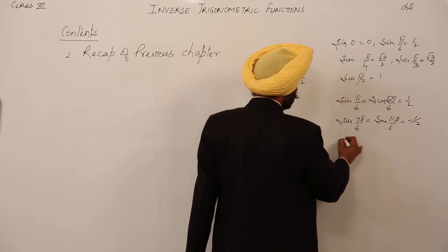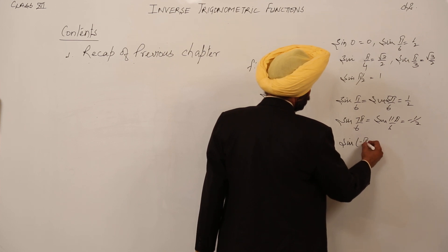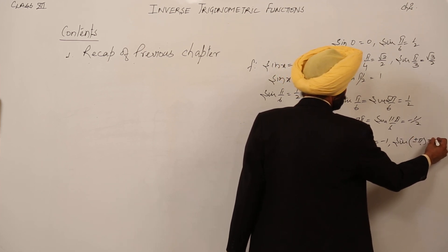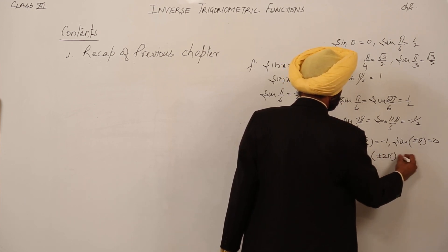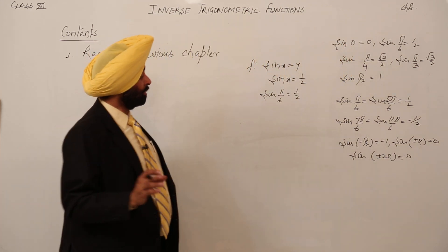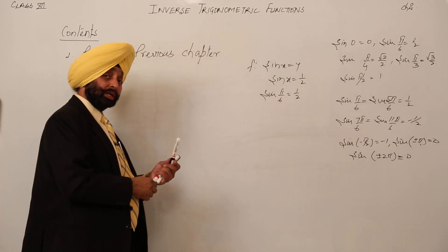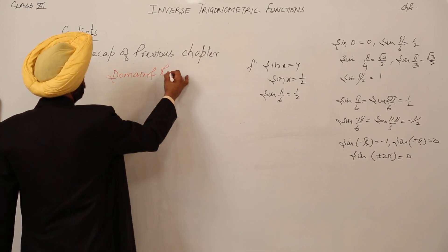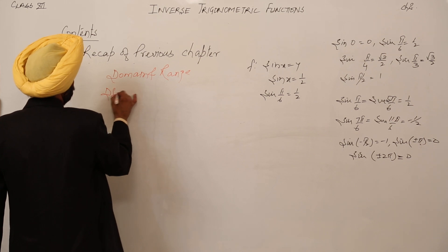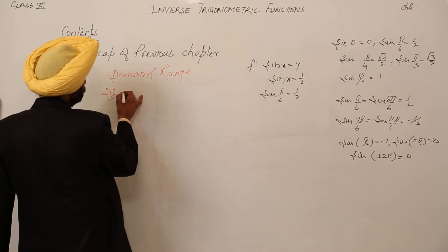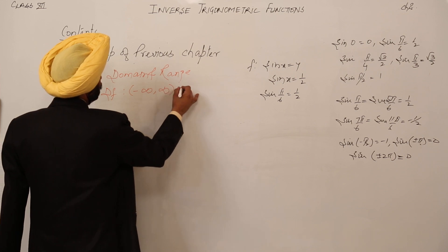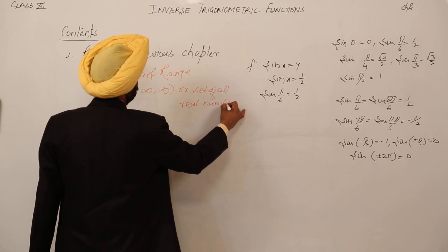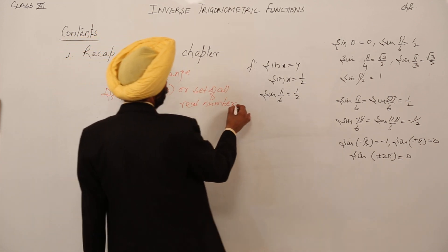We also have sin(−π/2) = −1, sin(±π) = 0, sin(±2π) = 0. So we can write a number of values. A small recap also for domain and range. What is the domain of the function sin x? It is given as minus infinity to infinity, or the set of all real numbers, called R.